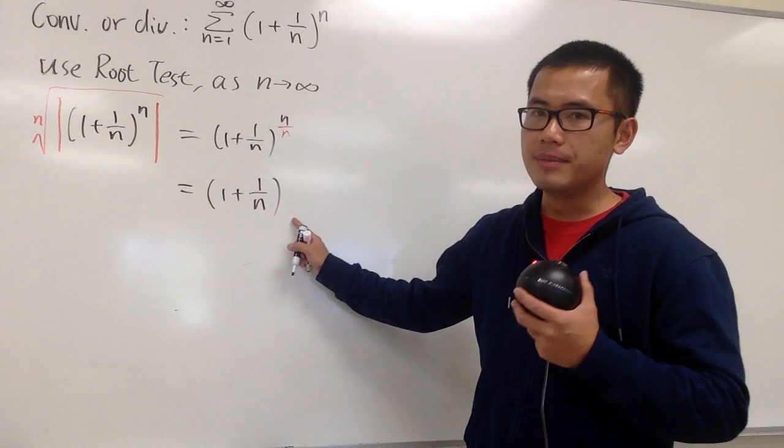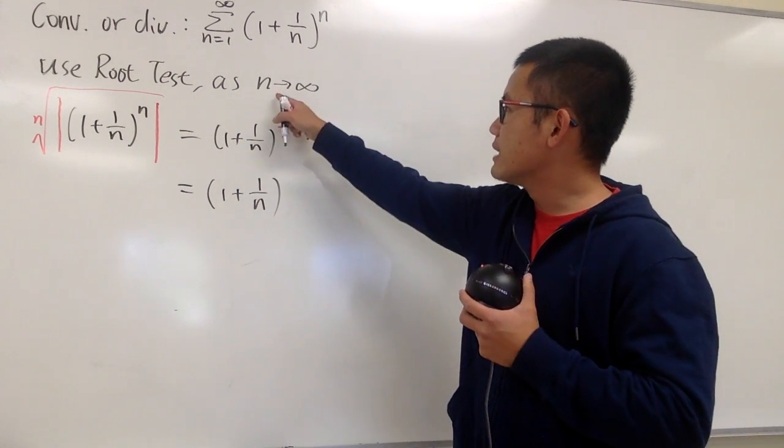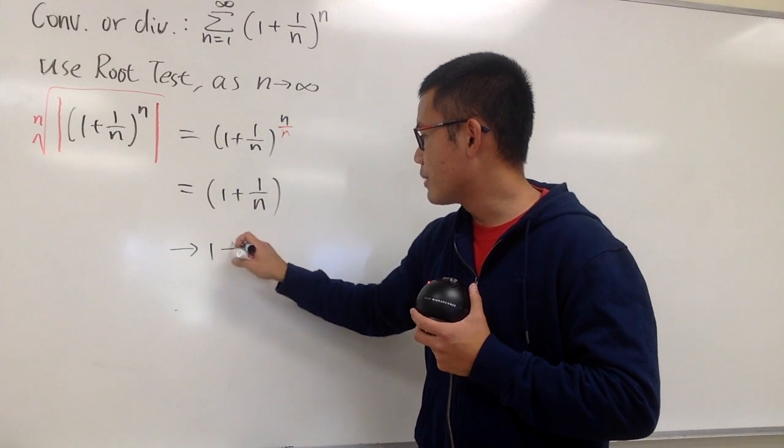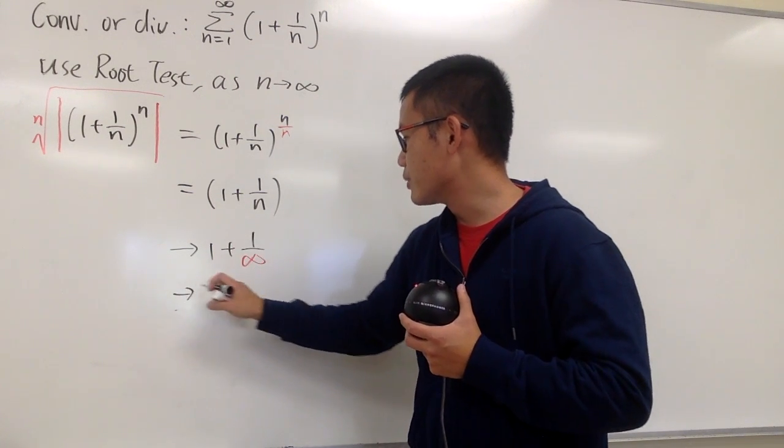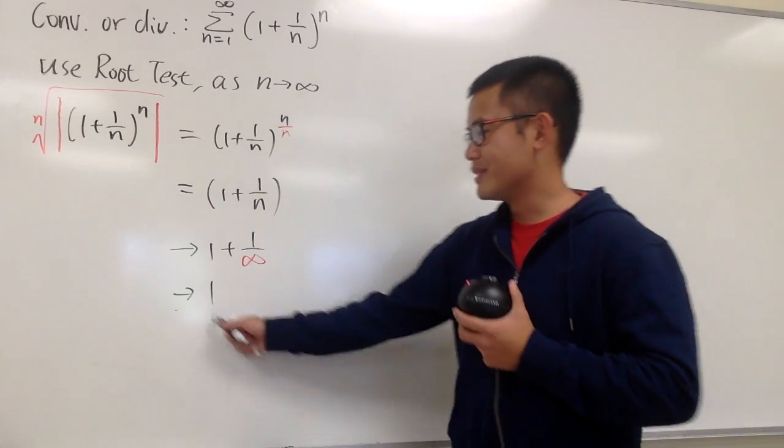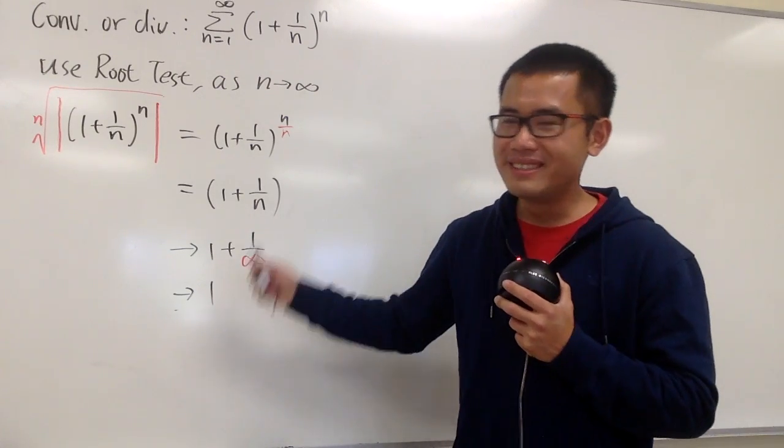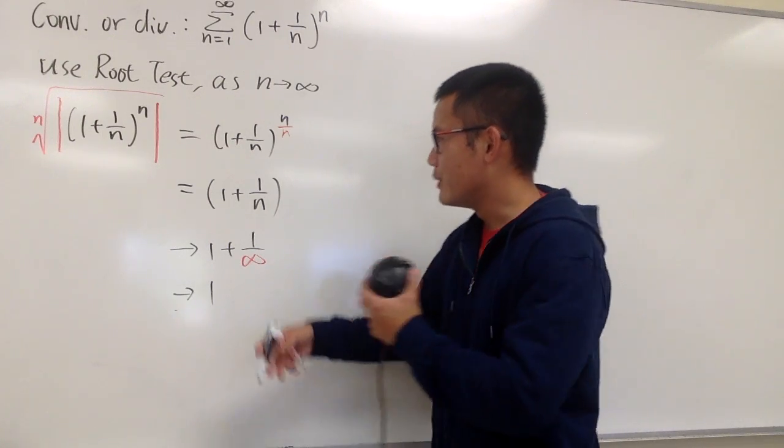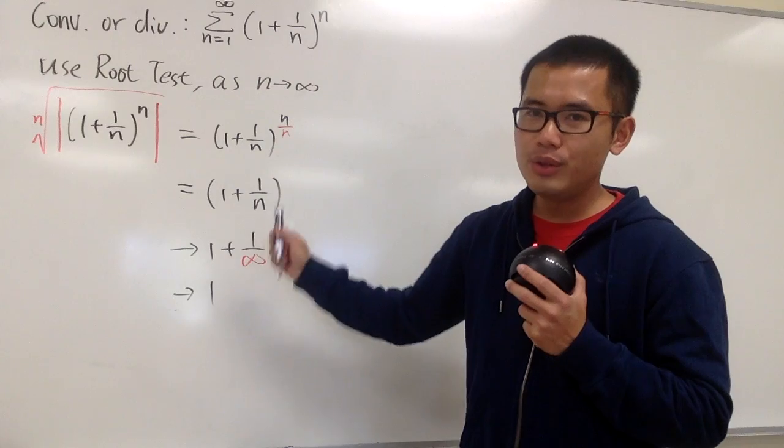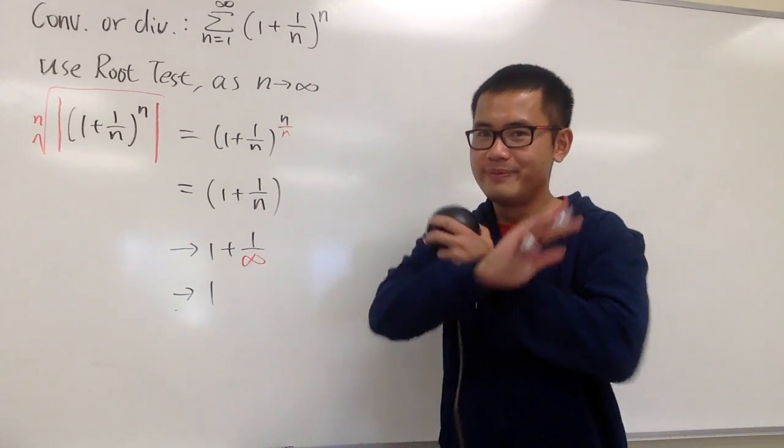And now, can we take the limit? Yeah. As n goes to infinity, this is going to be approaching 1 plus 1 over infinity, which is approaching 1 plus 0, which is 1. This is the limit, the result after we take the limit of doing the root test. Is this any useful? No, right?